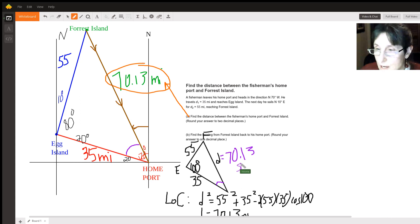So let's go over here and use the law of sines and figure out what that angle is. We're going to have that the sine of 100 over 70.13 equals the sine of my home port angle, we'll just call it H for home port, over across from the home port is 55.